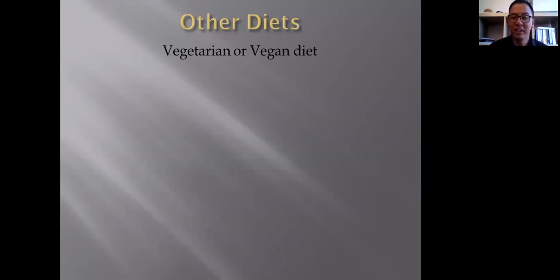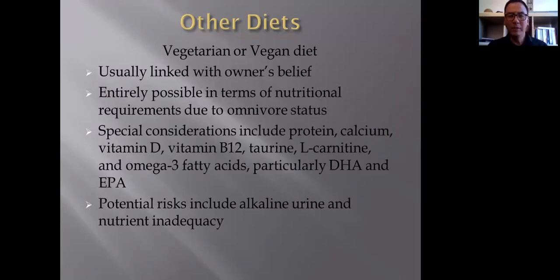Now vegetarian or vegan diet. Yes, they do exist in dogs. Be very clear about this: not for cats. Cats are obligate carnivores, they have to eat meat. But dogs can actually go vegetarian or vegan. And usually, not all the time, and I do apologize, usually this is done because the pet's owner is a vegetarian or a vegan, and hence they want to have the similar ideology, the ideal principles for their own pet as well. I'm not judging right or wrong, I'm just reporting. It's usually linked with owner's belief. Entirely possible in terms of nutritional requirements due to the omnivore status. Because unlike cats, they're not obligate carnivores, so it's entirely possible.